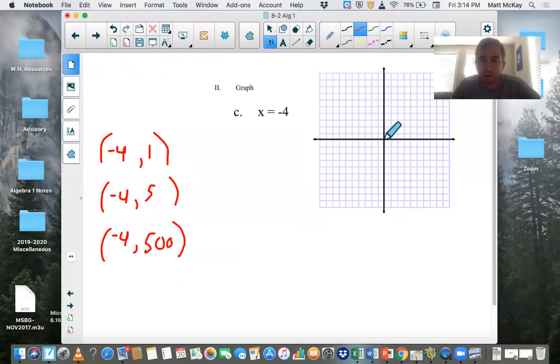Okay, so let's graph these. Negative four is about right here. One, two, three, four. And then one is right here. Negative four, five is somewhere over here. And negative four, 500 would be all the way up here. Okay, if you notice, whenever you have x equals a number, it's going to be a vertical line. Okay, this represents x equals negative four.